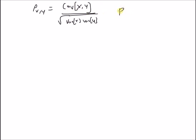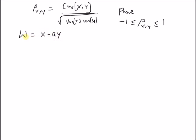Our goal is to prove that the correlation coefficient is bounded by minus one and plus one. In order to do that, we define another random variable w, which is defined as x minus a times y. Here, a is a still unknown value.